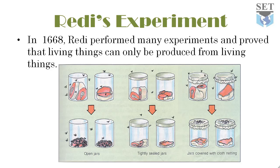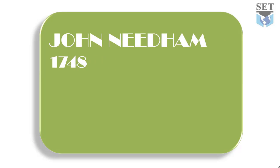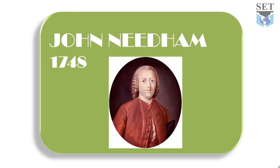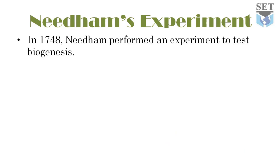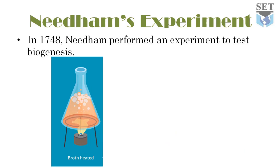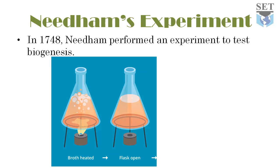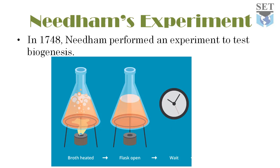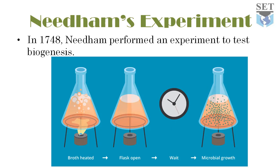To test this concept again, John Needham, an English scientist, performed an experiment in 1748. He boiled meat in water, poured the gravy into bottles, and covered the mouths with corks. After a few days, microorganisms were produced in the closed bottles. This result excited supporters of abiogenesis, who argued that living things can be produced from non-living things. The argument between biogenesis and abiogenesis continued up to the middle of the 19th century.